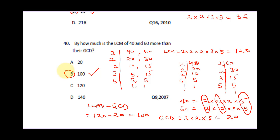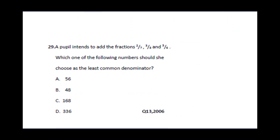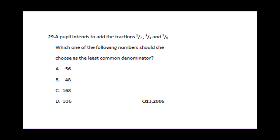The final question we're going to be treating today says a pupil intends to add the fractions 2 over 7, 3 over 8, and 5 over 6. Which one of the following numbers should she choose as the least common denominator? So let's find the LCM of these three numbers.